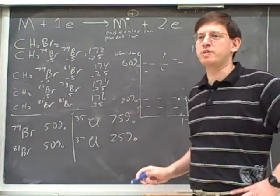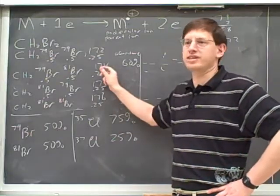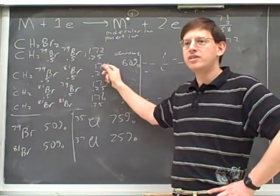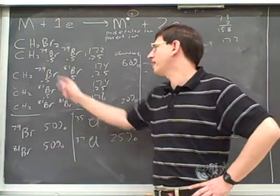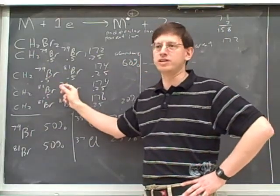But what's the chance that we're going to have a weight of 174? 50%. This is what messes people up on these problems. This is the big trap, because there's two different ways to get a 174, either 79-81 or 81-79.